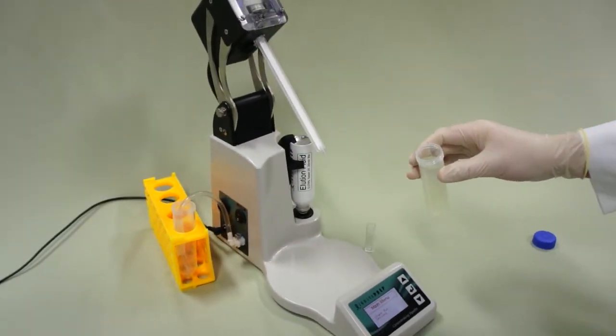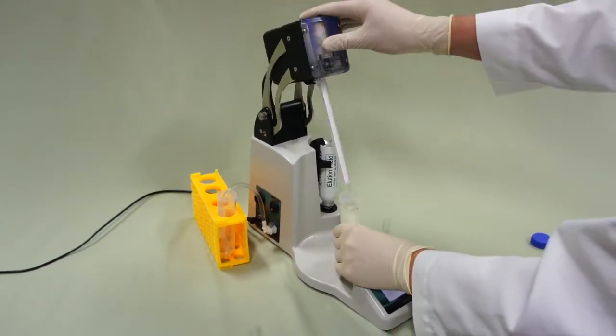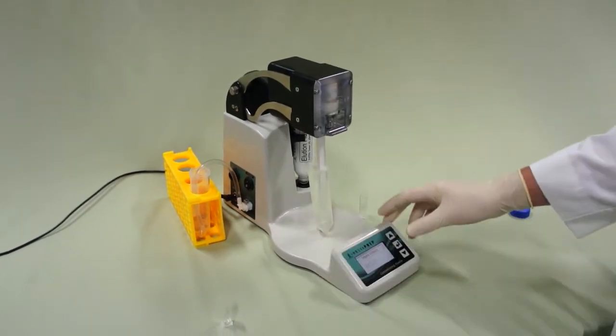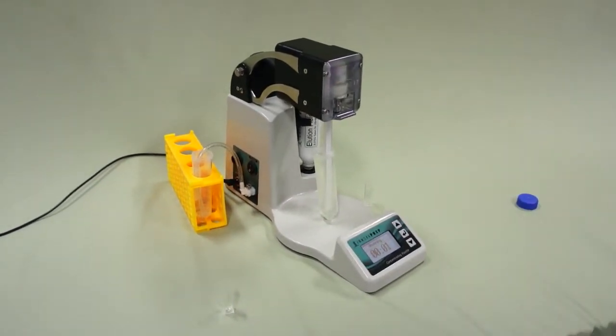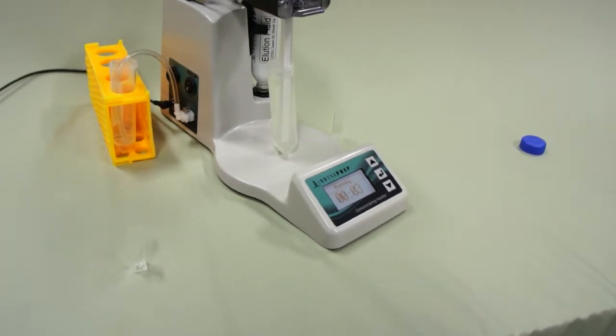The now dilute sample is placed on the sample platform, and the concentrating pipette tip is lowered into the liquid. The concentration process begins when the user selects Start Run on the control panel.